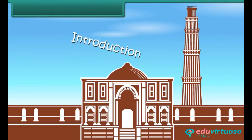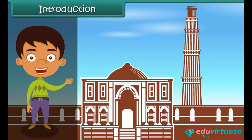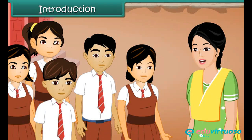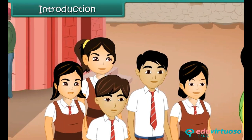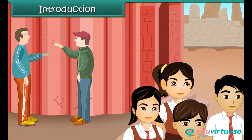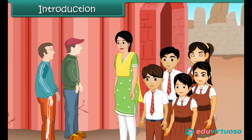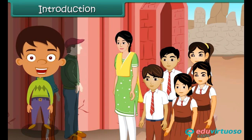An educational tour to Qutub Minar has been organized by Droof School. The history teacher Latamam takes the students around and tells them interesting details about the monument. Their attention is diverted by the laughter of some boys from another school. They turn around and find them scribbling their names on the walls. Latamam tells them that such monuments are public property, and as citizens of India it is our responsibility to protect them.